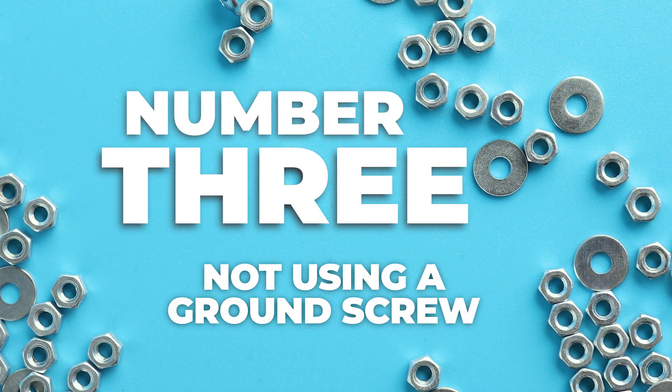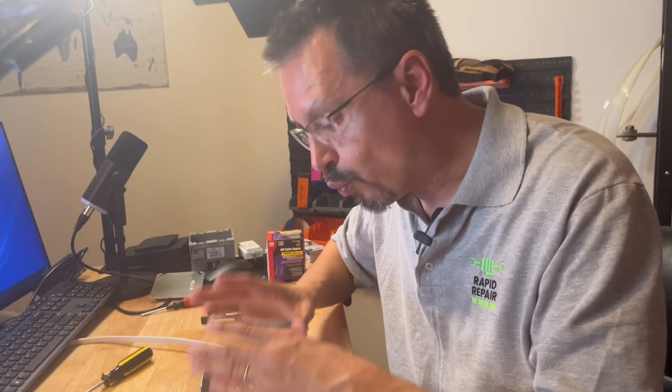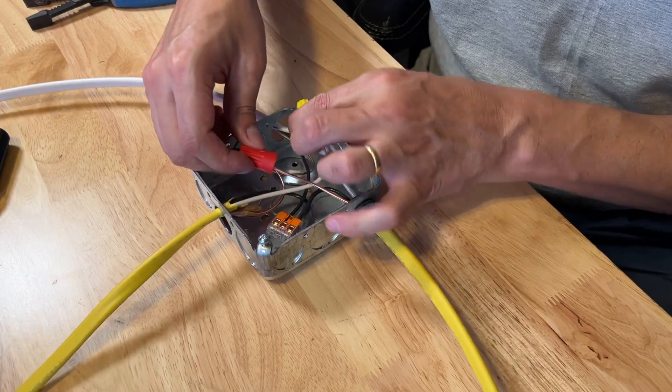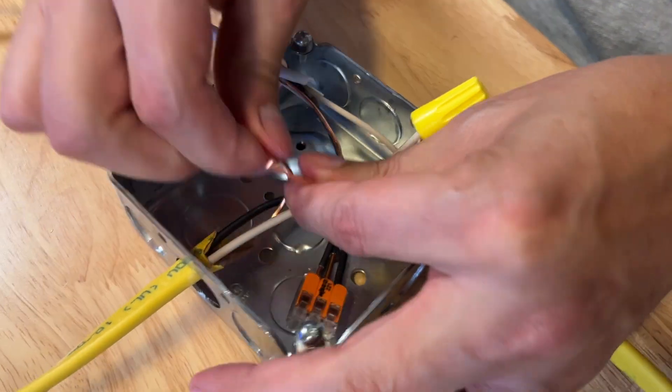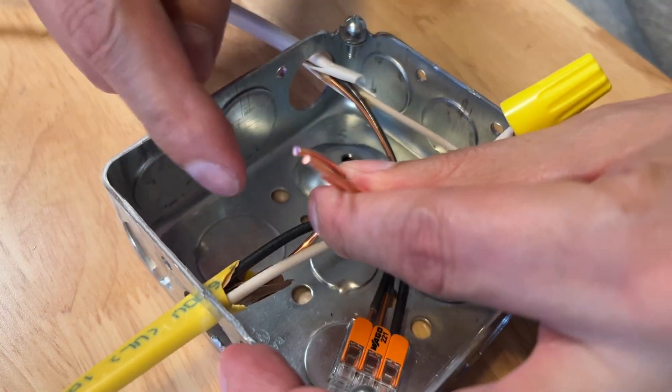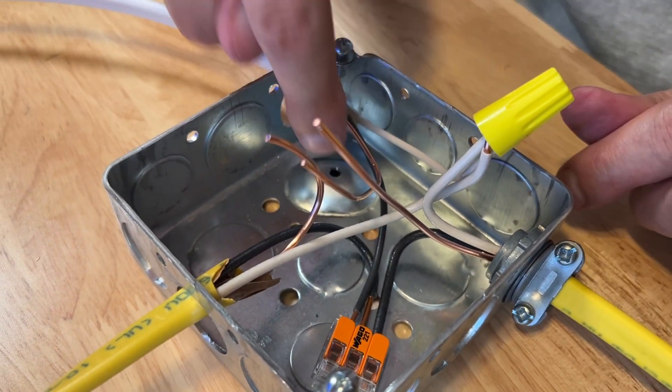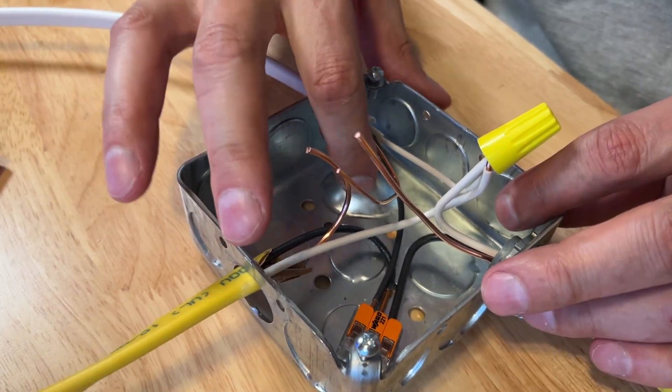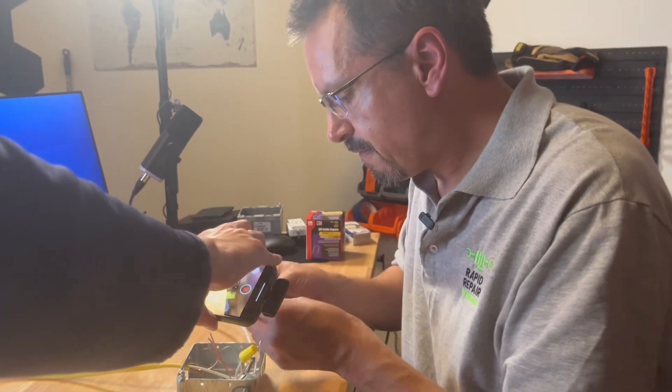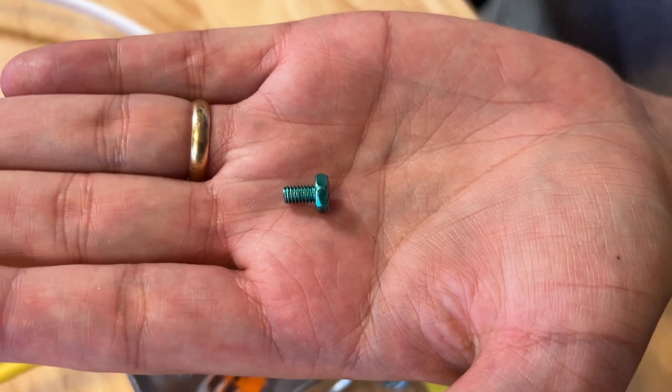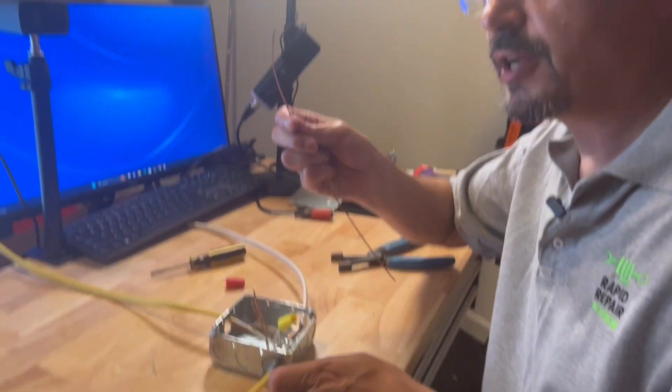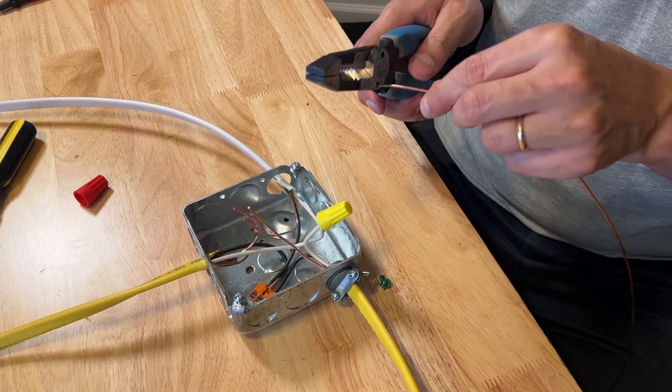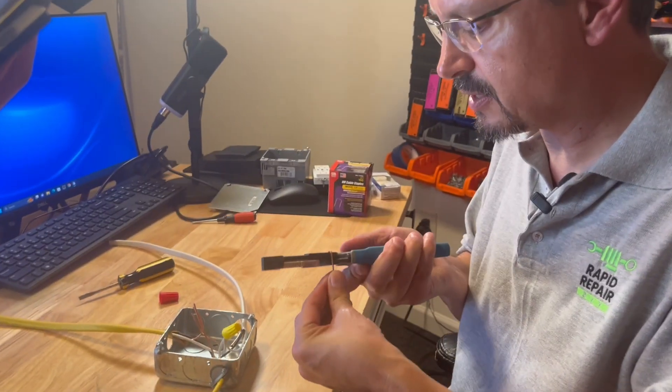Number three, not using a ground screw. So with metal boxes, you have to ground it to the box. Now here we have the grounds all bonded together. And that's great. However, you are required to have it bonded to the metal box. Now on this metal box, it gives you that funny little bump out shape. That bump out is for a grounding screw. So what you're going to do is you're going to get bare copper wire, and you can just cut it out of your existing Romex. Use your wire cutter to put a little twist on there.